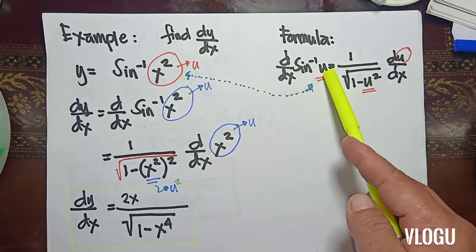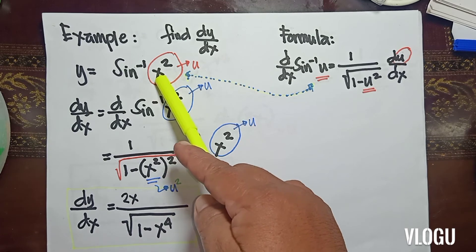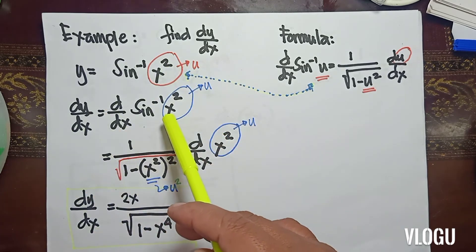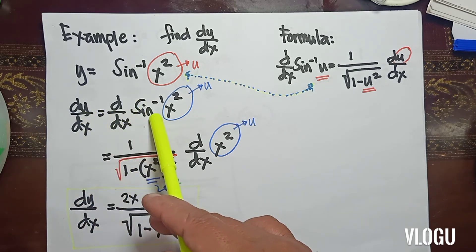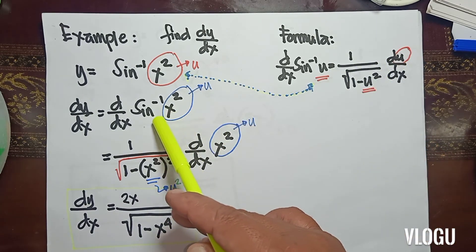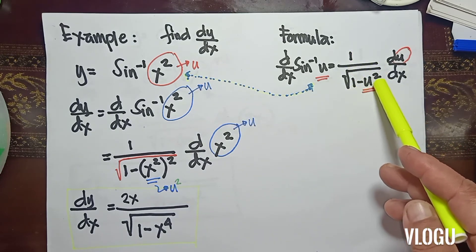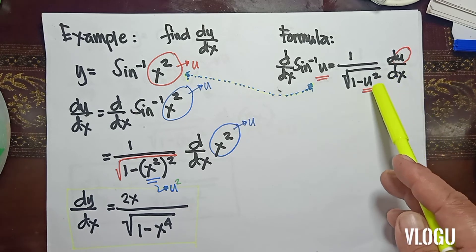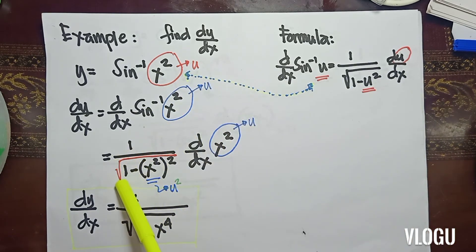Since our u is represented in our example as x squared, from the formula we will have dy/dx of sine inverse x squared. The formula states that the derivative of sine inverse is equivalent to 1 over the square root of 1 minus u squared times du/dx. Our u is equal to x squared, so 1 over the square root of 1 minus u squared, where u is x squared.